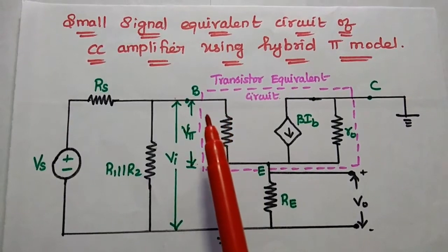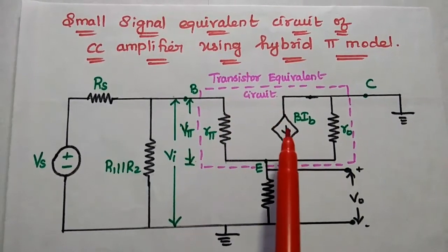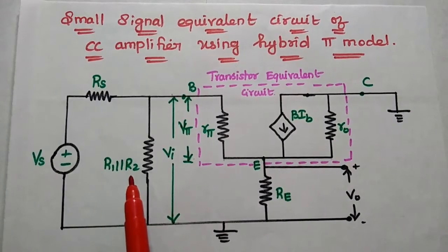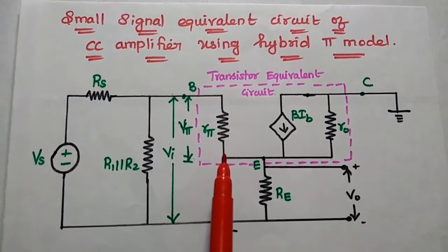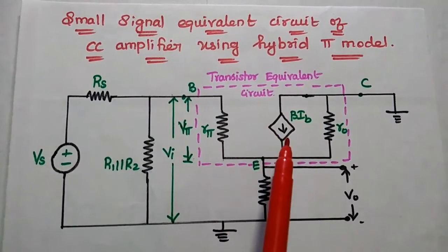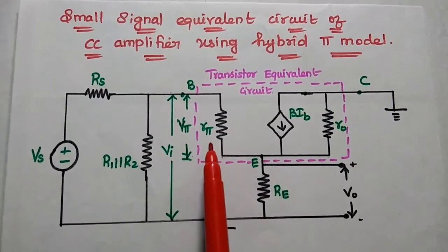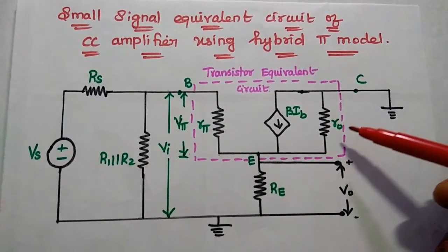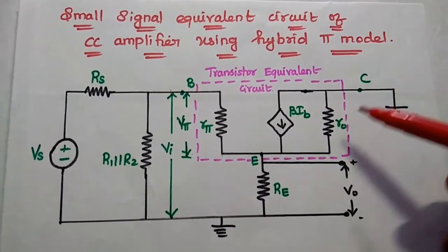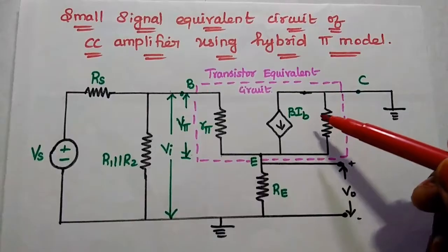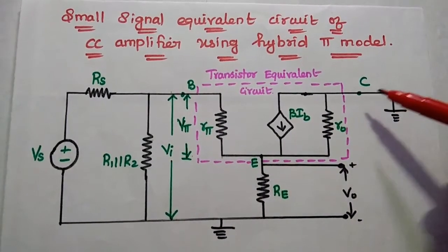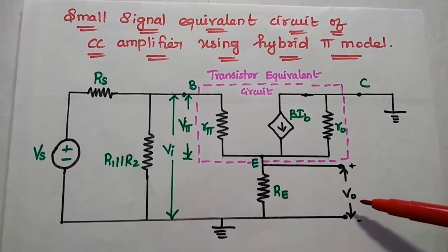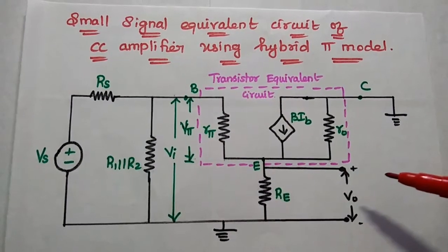The next step is to replace the transistor with its equivalent hybrid pi model. In the small signal equivalent circuit of CC amplifier, the voltage source VS is in series with RS, R1 in parallel to R2, and the transistor is replaced with its equivalent circuit with parameters Rpi, Beta·Ib, and Ro. Rpi represents the small signal internal base-emitter resistance. Ro is the internal small signal output resistance between collector and emitter. Beta·Ib is the current element. Collector is grounded. Re is the emitter resistor across which we take the output voltage.